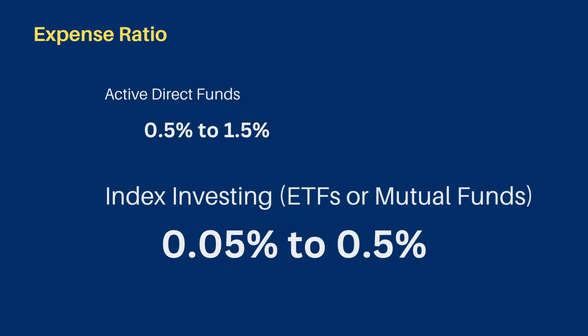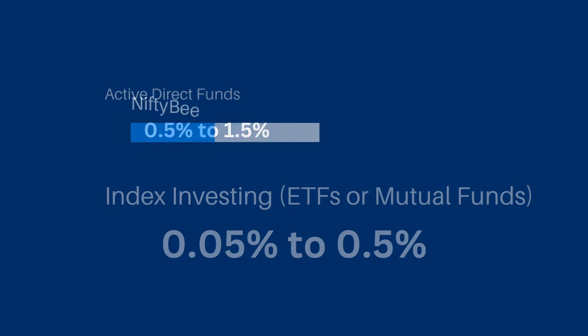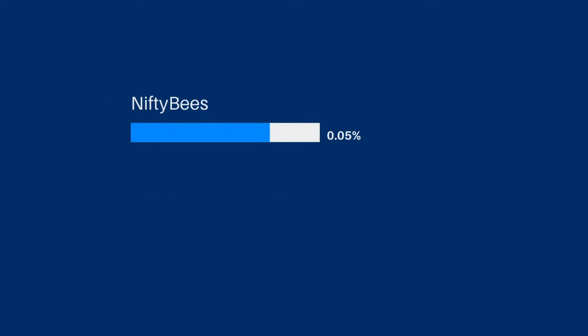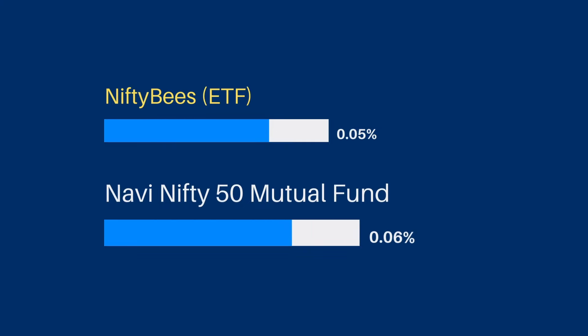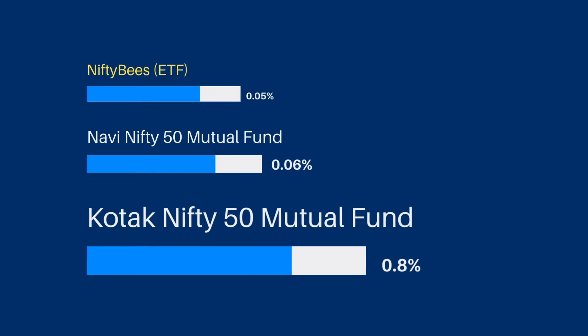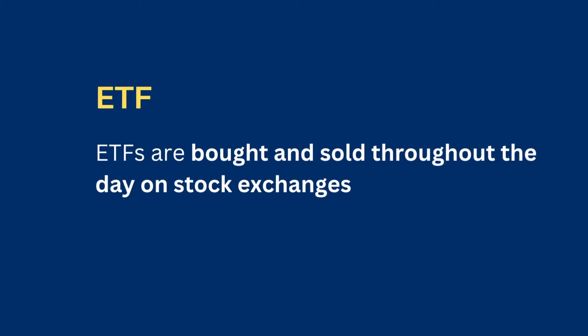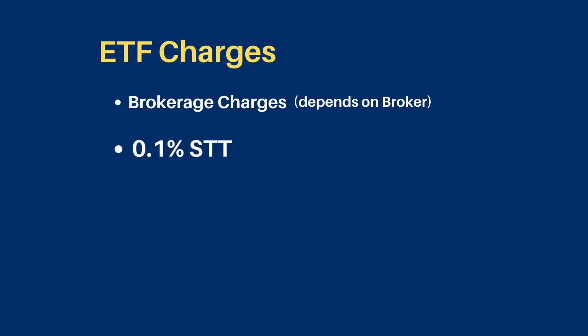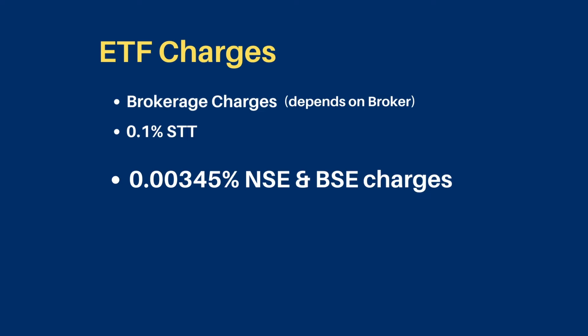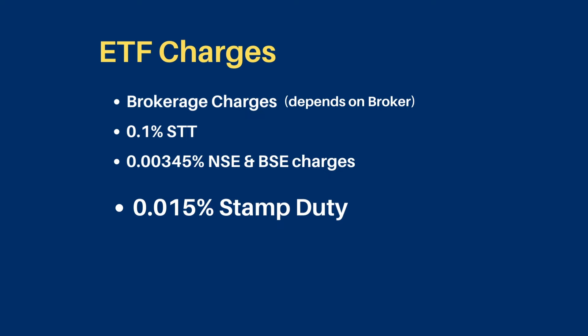The majority of active mutual funds have an expense ratio of 0.5% to 1.5%. For index-based investing, Nifty BeES ETF has an expense ratio of just 0.05%. Comparing index funds: Navi fund expense ratio is 0.06%, Kotak Nifty 50 fund expense ratio is 0.8%, and HDFC is 0.2%. However, you also have to pay brokerage charges for ETFs: 0.1% STT, 0.00345% NSE/BSE charges, and 0.015% stamp duty, plus depository charges.